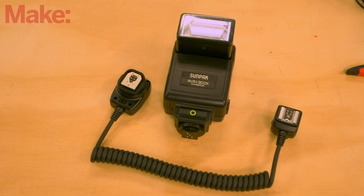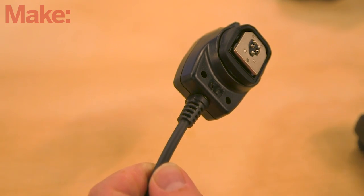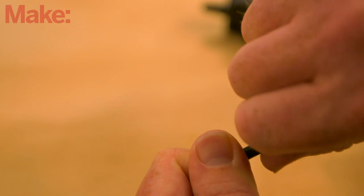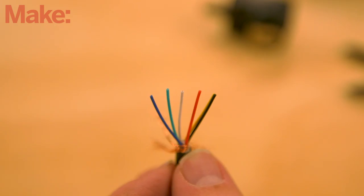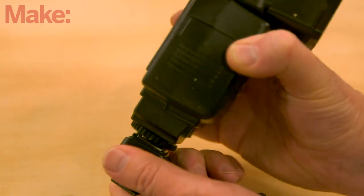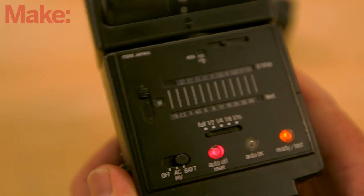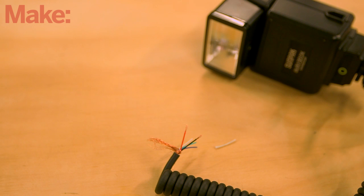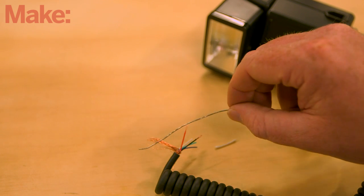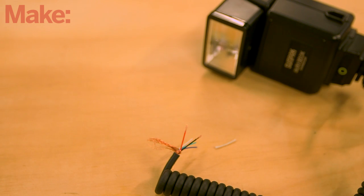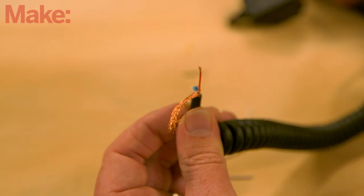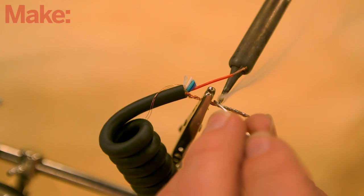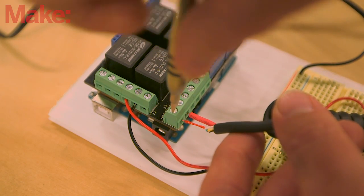Now we'll wire up the flash. Cut the off-camera flash cable near the end which connects to the camera. Strip the outer sheathing off, and then separate and strip the individual leads. Connect the flash to the other end and power it on. Once the flash is ready, identify the two wires needed for this circuit by touching them together. When the flash fires, you have the two wires you need. Trim the rest away. Tin the ends of these wires and connect them to the common and normally open terminals on Relay 3.